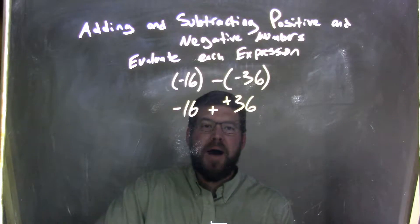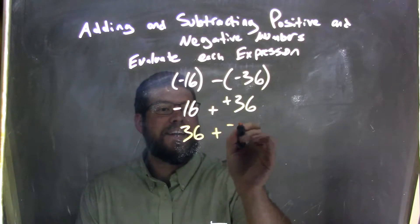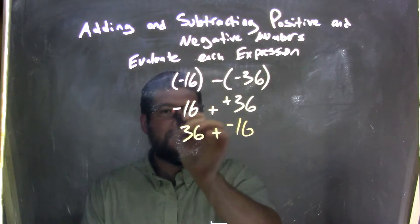So negative 16 plus a positive 36. Well, by the commutative property, I can rearrange that to be 36 plus a negative 16, right? We're adding, this is a negative here.